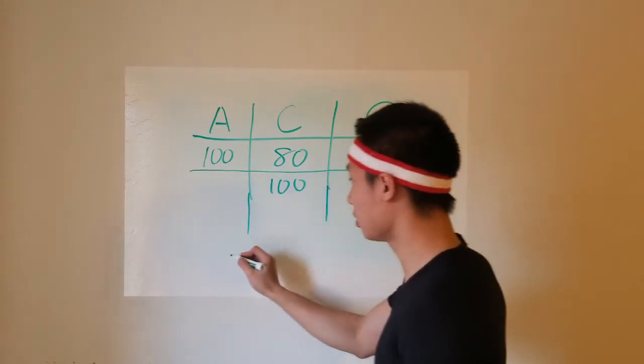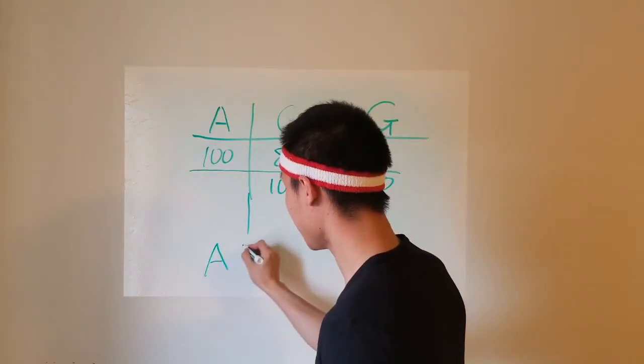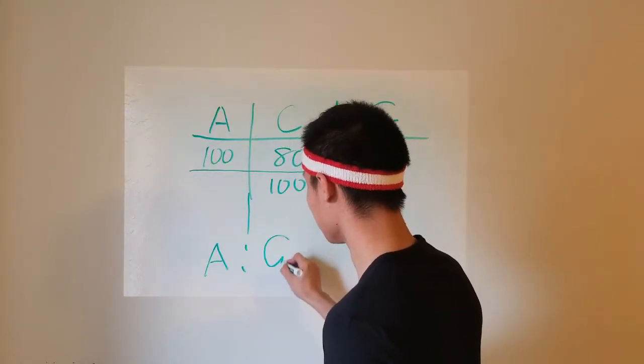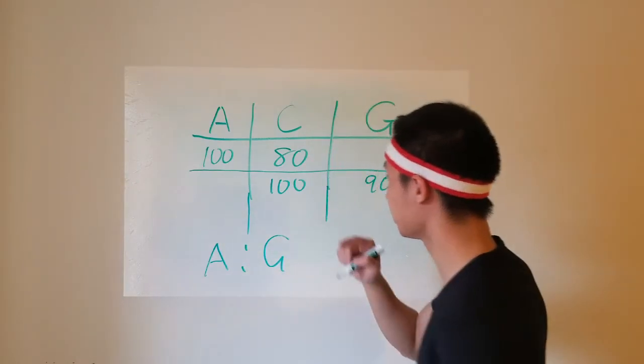So I want to know, ultimately, what is the speed of A compared to G, or the ratio of A to G.